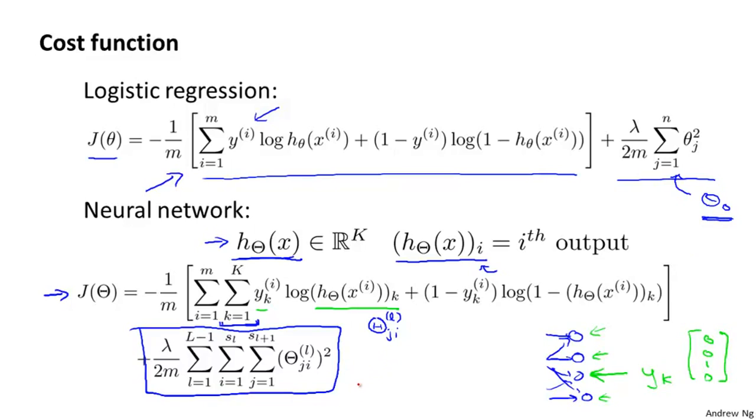Concretely, we don't sum over the terms corresponding to where i is equal to zero. That is because when we're computing the activation of a neuron, we have terms like theta_i0 plus theta_i1 x_1 plus and so on. This is the first hidden layer, and so the values of theta zero there, that corresponds to something that multiplies into an x_0 or an a_0. And so this is kind of like a bias unit. By analogy to what we were doing for logistic regression, we won't sum over those terms in our regularization term, because we don't want to regularize them and shrink them out.